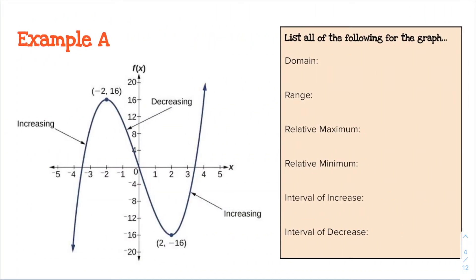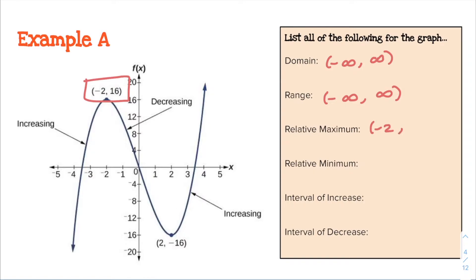Let's do an example. We're going to look at this graph and list all of these features. Domain and range we've done before — the domain is negative infinity to positive infinity, and the range is also negative infinity to positive infinity. For relative maximum, that's the highest output within a certain area, so if we're driving left to right that's the top of the hill — this would be the relative maximum at (−2, 16). We can also say y equals 16 when x equals negative 2.